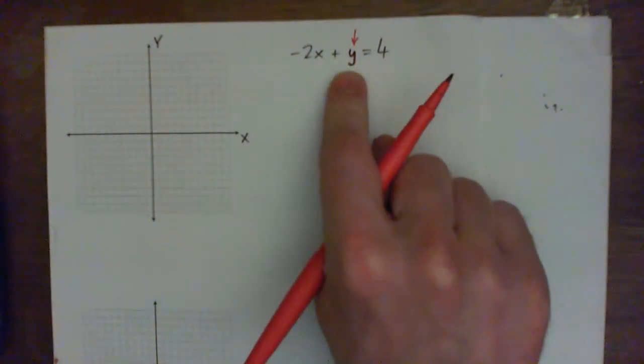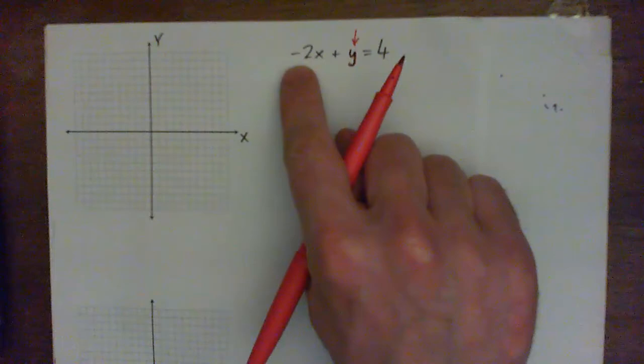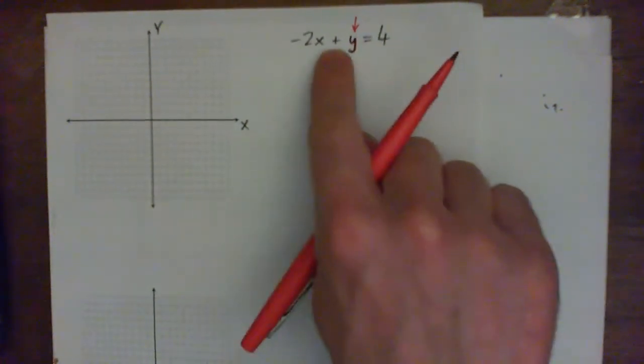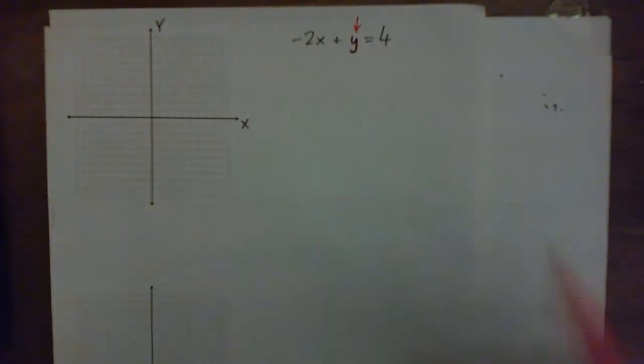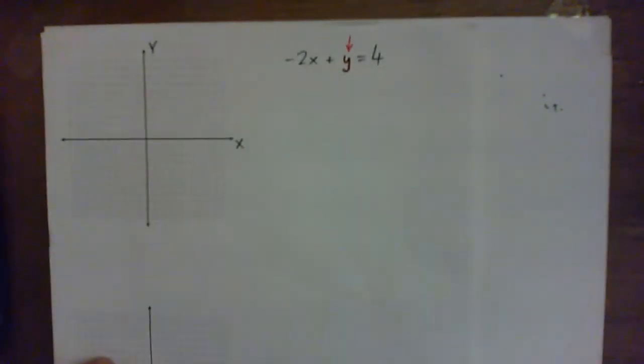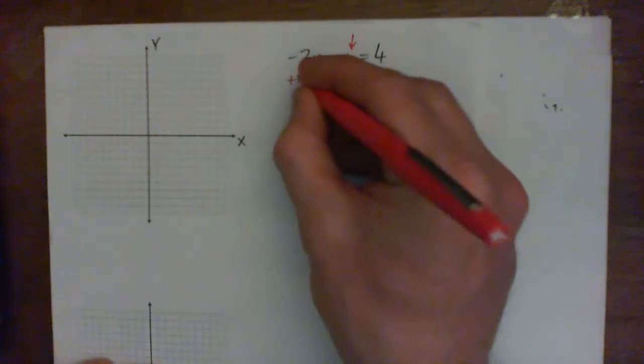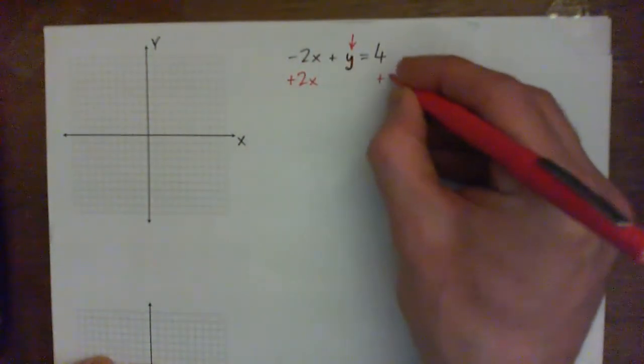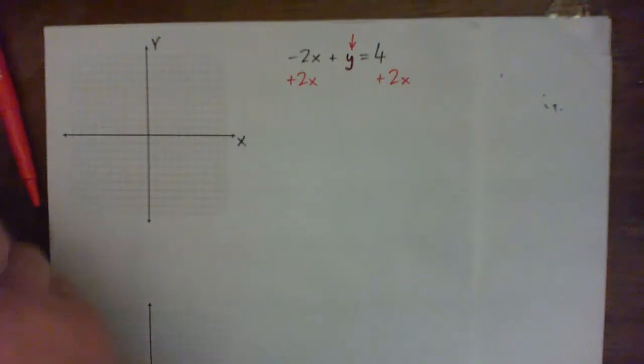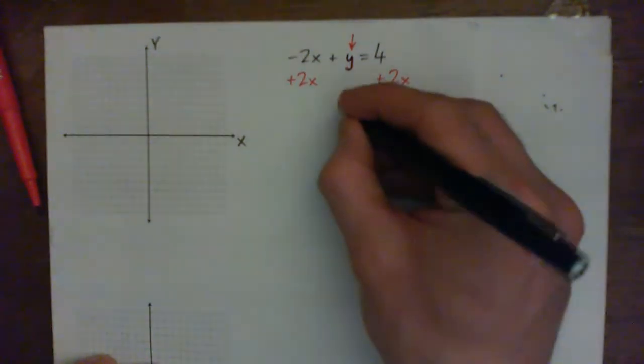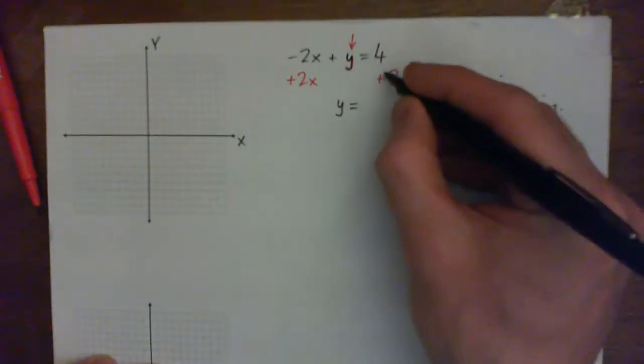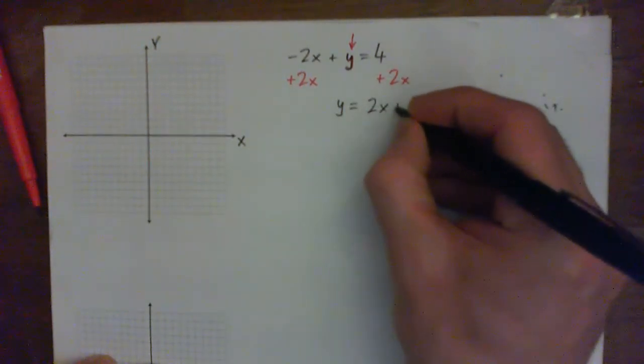So to get y by itself, we have to get rid of the negative 2x. It's like negative 2x is being added on, so to undo that and get y on its own, we'll add 2x to both sides. That will give us y equals 2x plus 4.